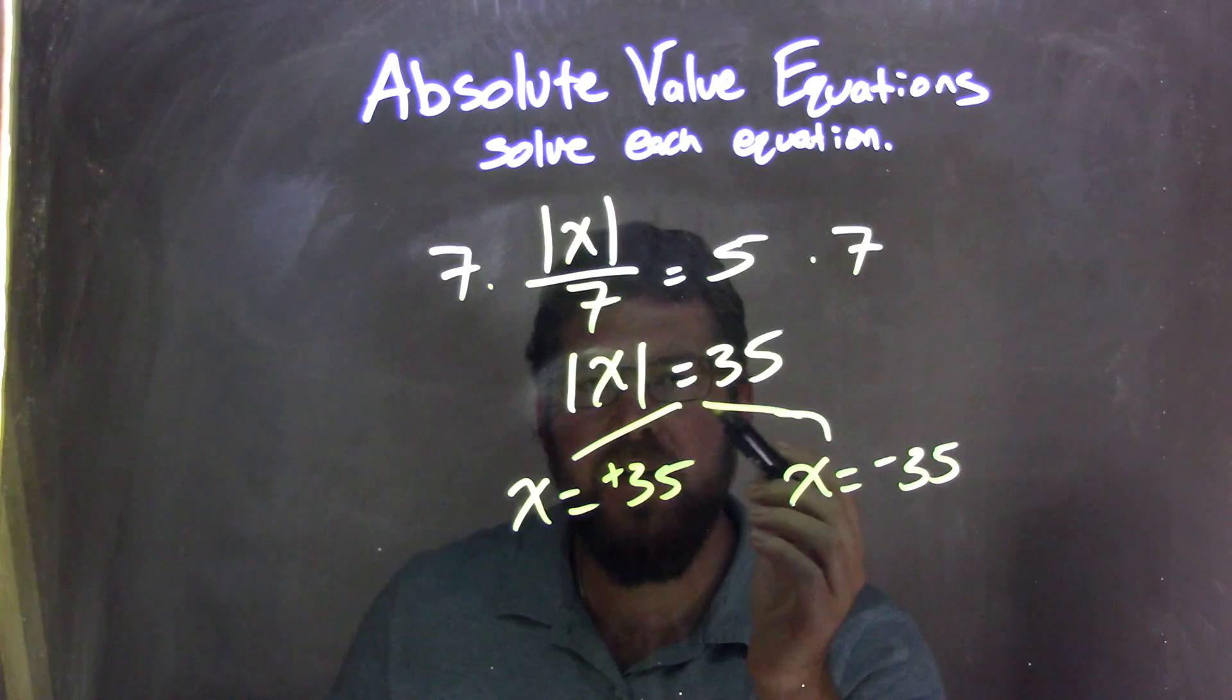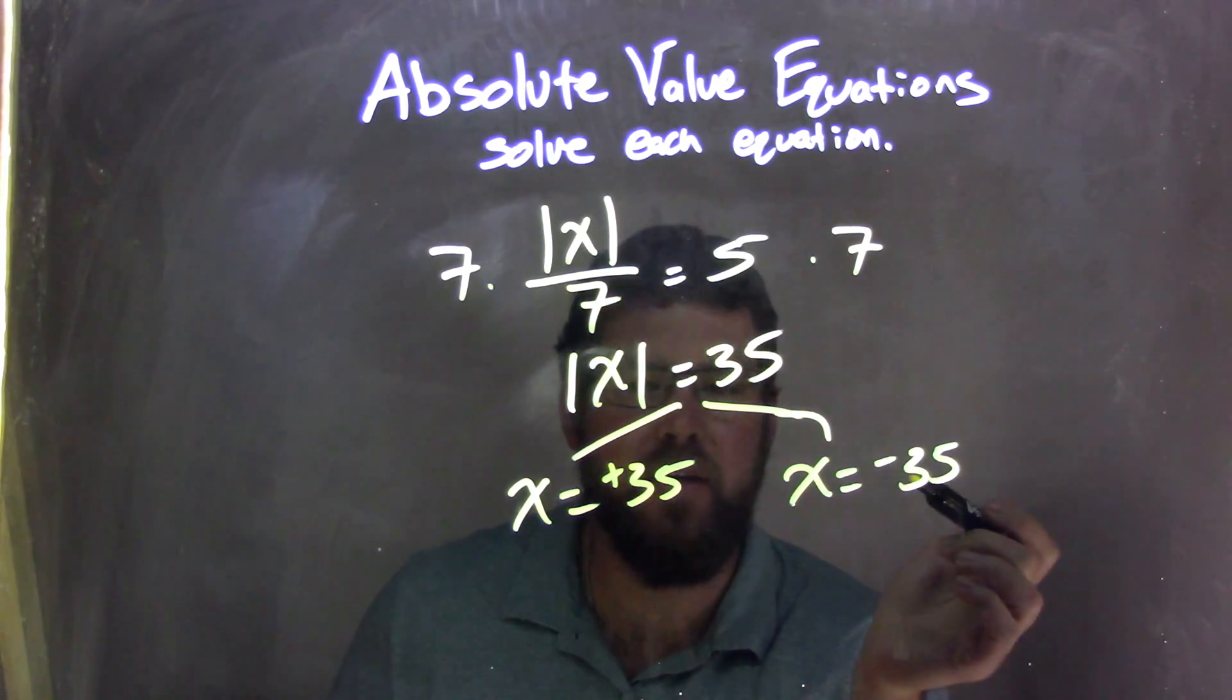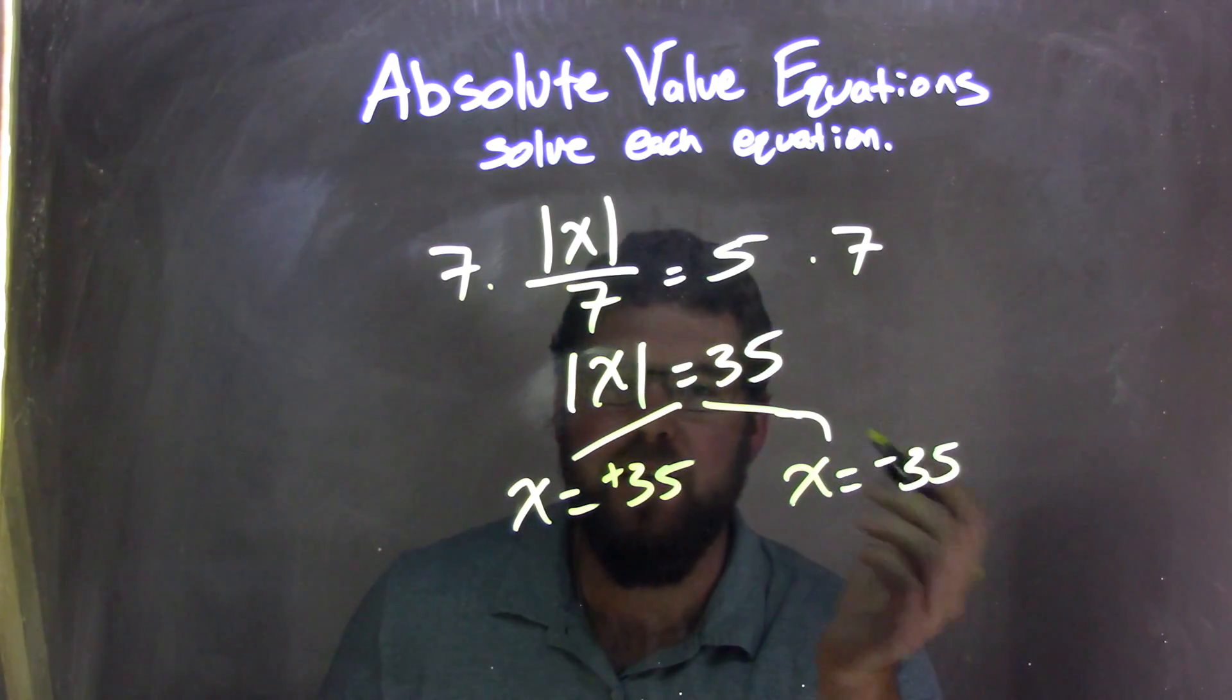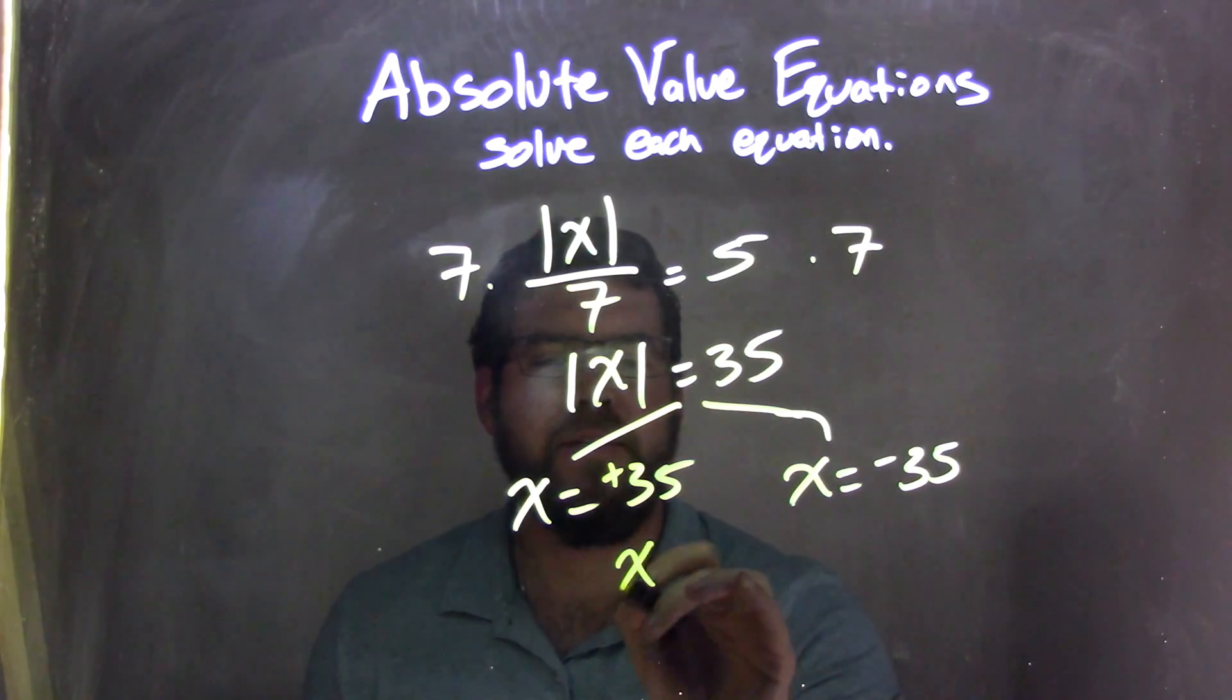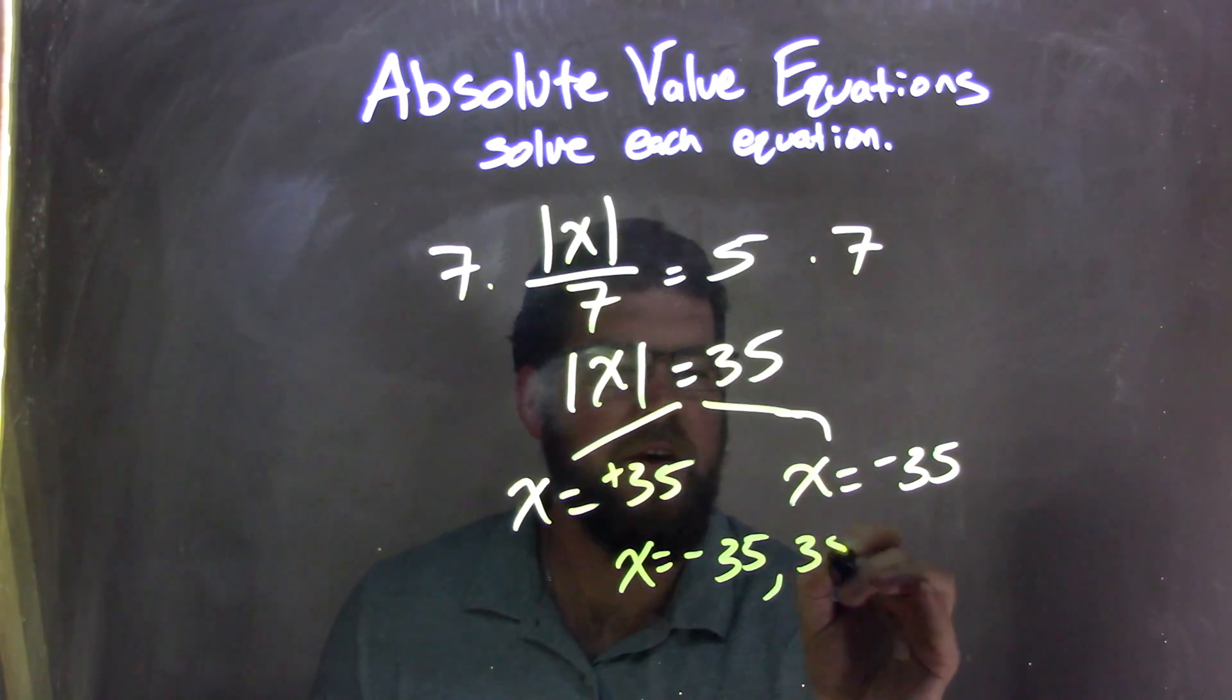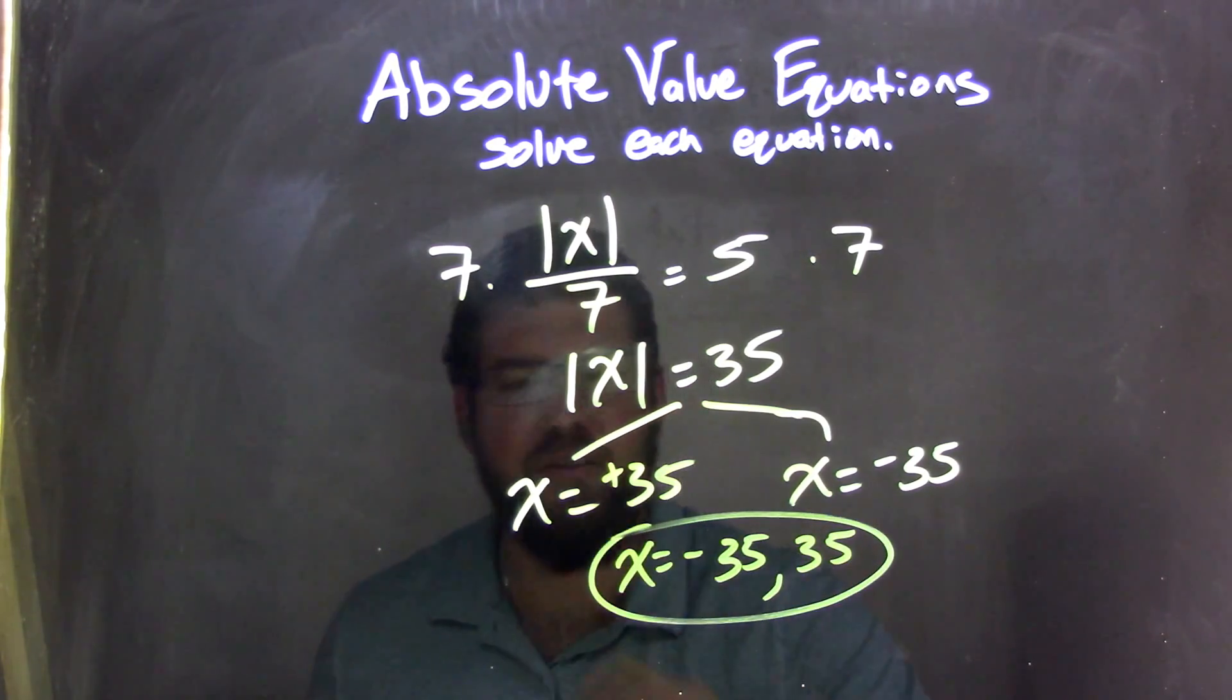Once the absolute value is isolated, we can break this apart into a positive and negative. From there, I'm basically done. I'm going to rewrite the lower number first. We have x equals negative 35 and positive 35, and that, folks, is my final answer.